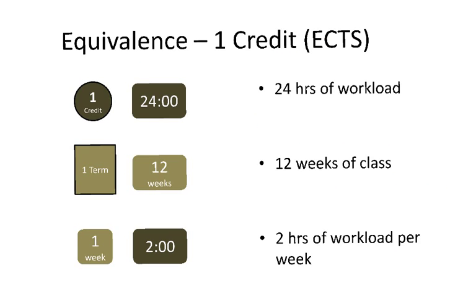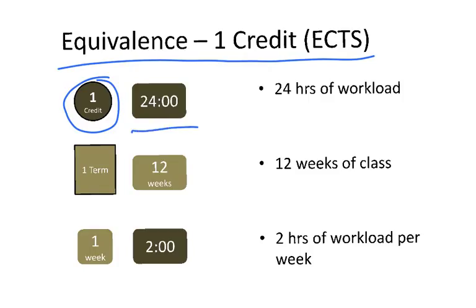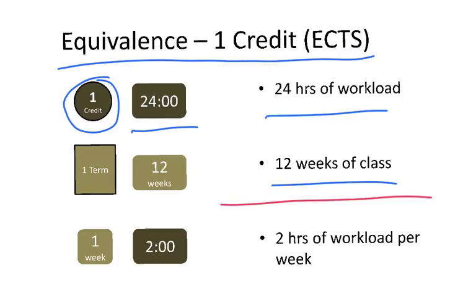Now what is the equivalence of one credit versus the workload? Well, one credit is equal to 24 hours of workload. Then if we look at one typical semester, we tend to have 12 weeks of class. If we divide the 24 hours of workload of one credit by 12 weeks, that's equivalent to two hours of workload per week.